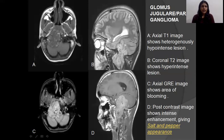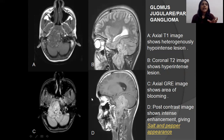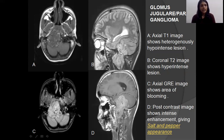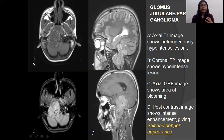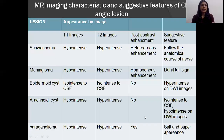Glomus jugulare or paraganglioma is mainly seen in the jugular fossa. It shows heterogeneously hypointense on T1, heterogeneously hyperintense on T2, and on GRE there are areas of blooming due to micro-hemorrhages. On post-contrast, there is intense enhancement. The salt-and-pepper appearance is pathognomonic for paraganglioma.